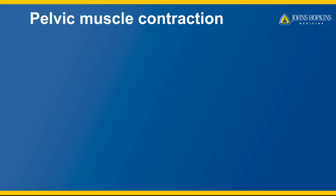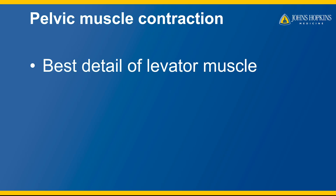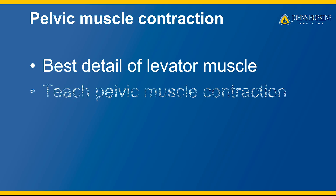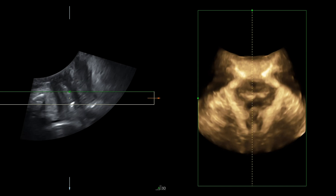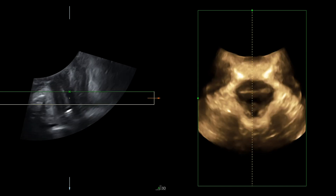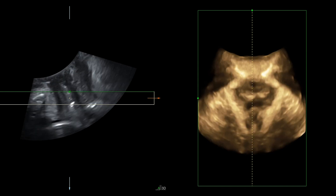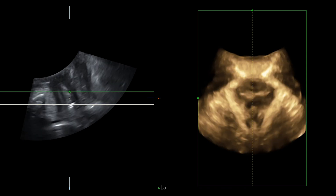This next series is a pelvic muscle contraction, or Kegel. The levator muscle is seen most clearly with maximal contraction. This series can be used to assess for levator injury and for biofeedback during pelvic muscle retraining. Similar to the Valsalva series, this series is best obtained with a split-screen view.